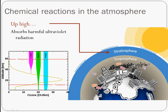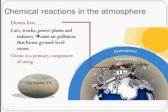The ozone layer absorbs nearly all of the UVC, most of the UVB, and a little bit of the UVA. What makes it down to the surface is mostly UVA and a little UVB. Down low, ozone is a secondary pollutant resulting from fossil fuel combustion — cars, trucks, power plants, and industry all emit pollution that forms ground-level ozone. It's a lung irritant and a primary component of smog. So good up high, bad down low.